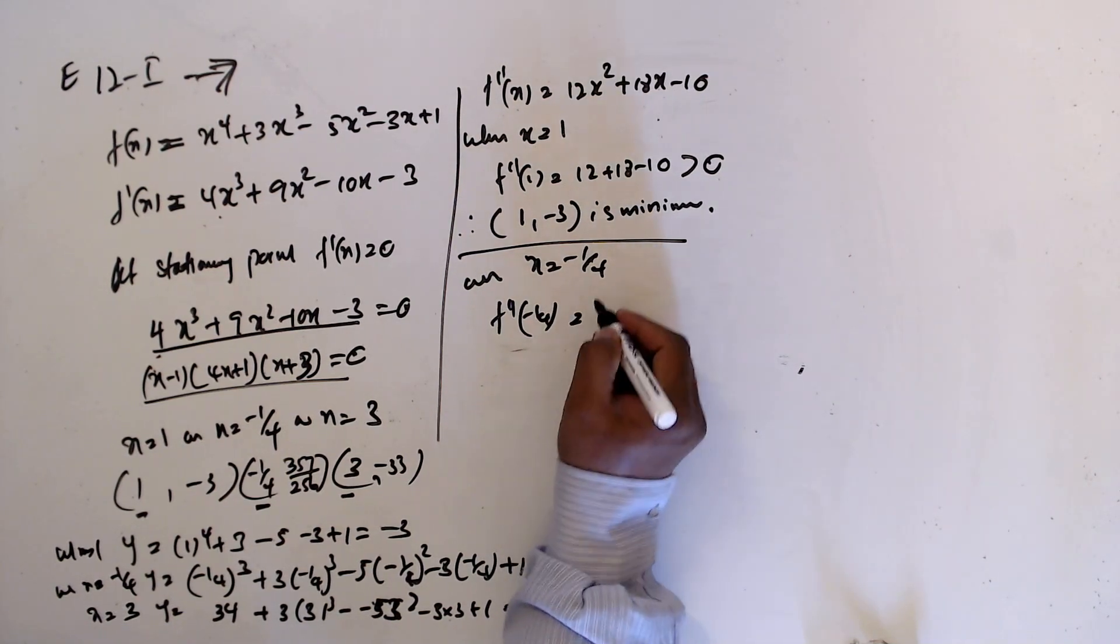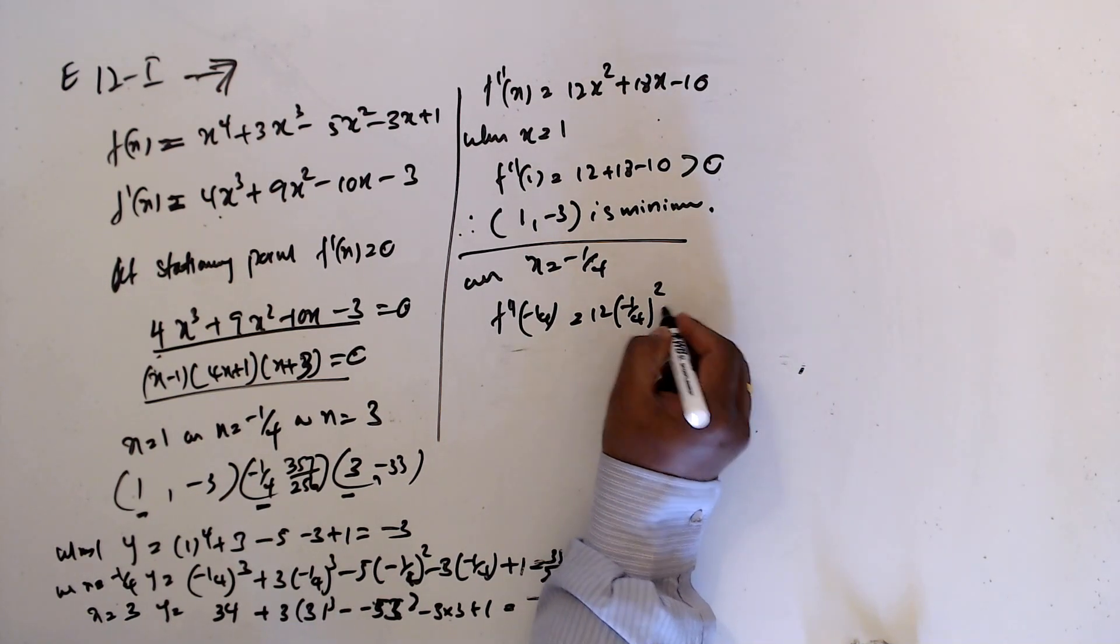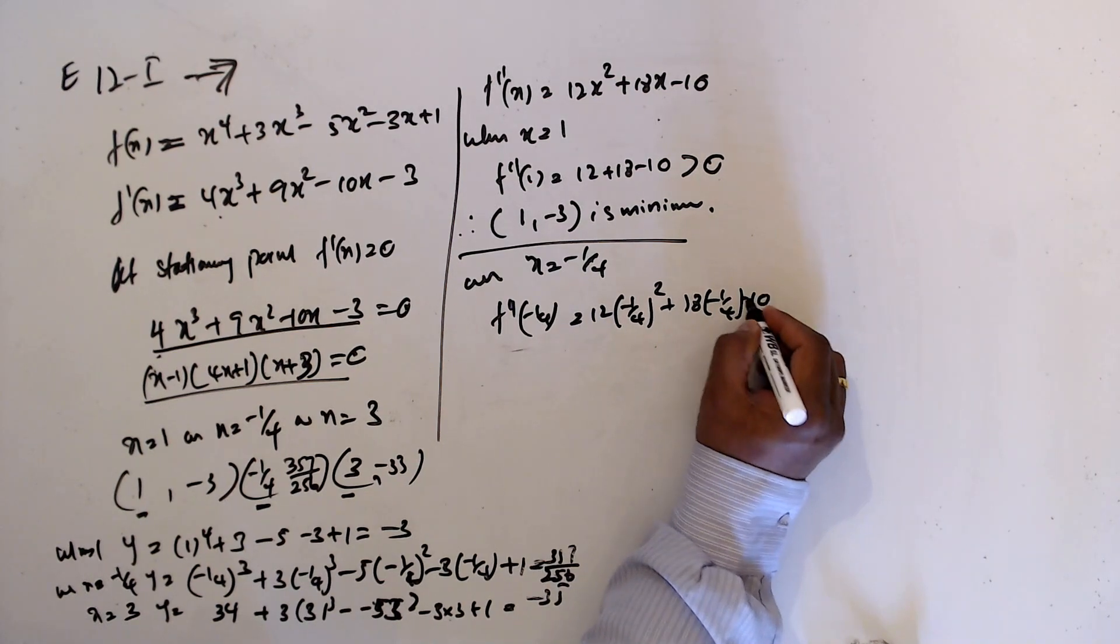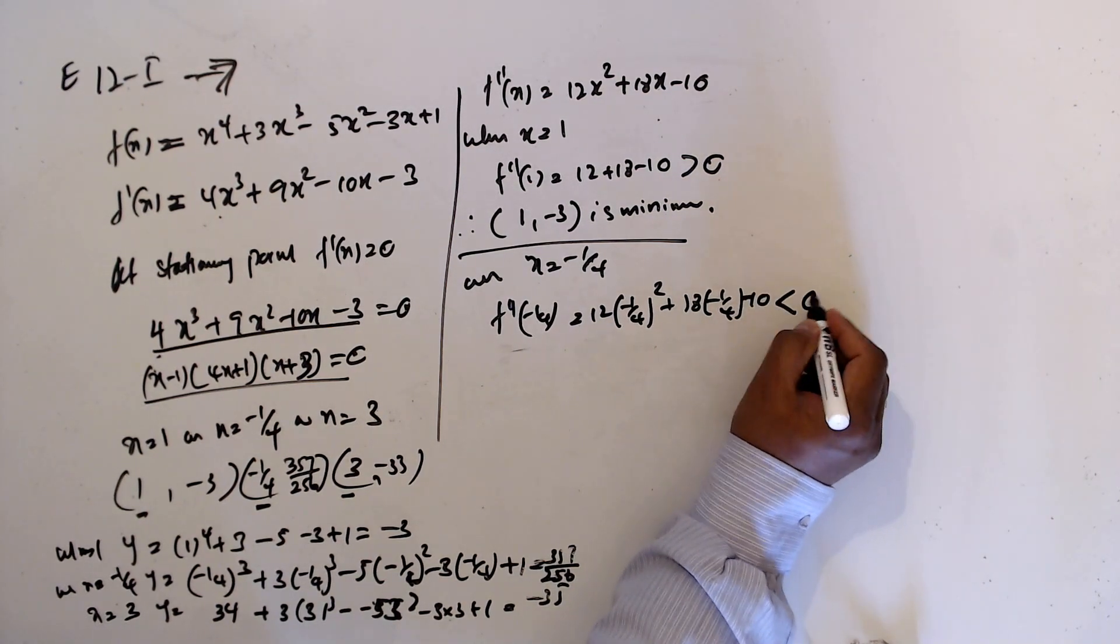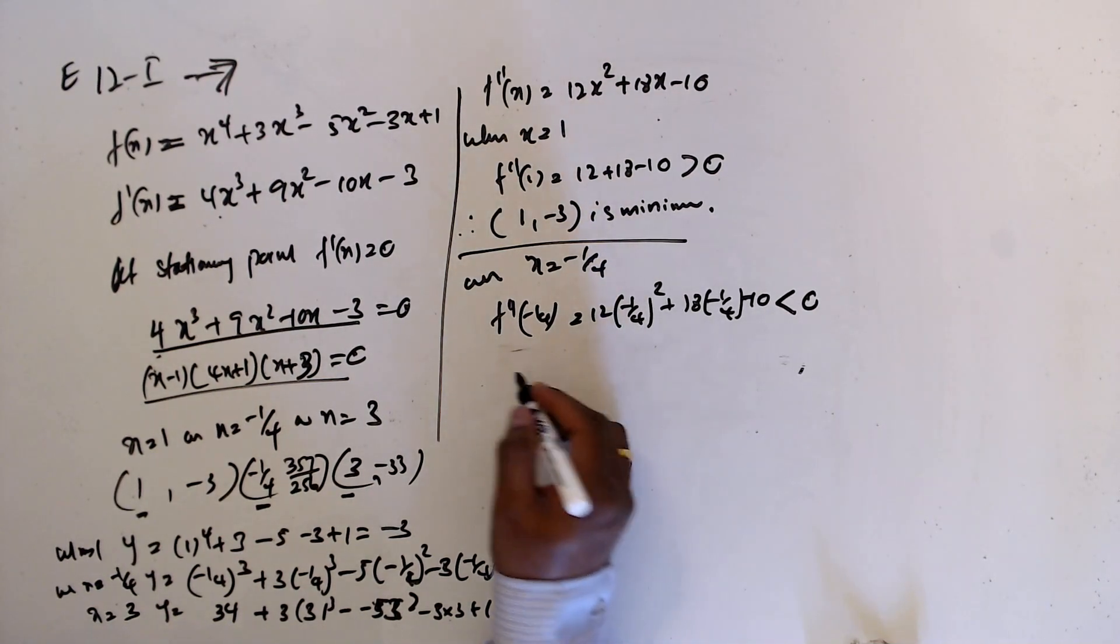minus 1/4 equal 12(-1/4)^2 plus 18(-1/4) minus 10. This value will give less than 0, so this is going to be...